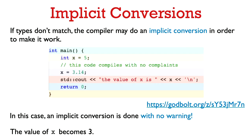But if the types don't match, the compiler will still try to do an implicit conversion in order to make it work. So for example, here we initialize an int x with value 5 and then we assign it the value 3.14. And this code will compile with no complaints, but it does do an implicit conversion. So the value that will be printed out here is actually 3. So this floating point number 3.14 is silently converted into the integer 3.